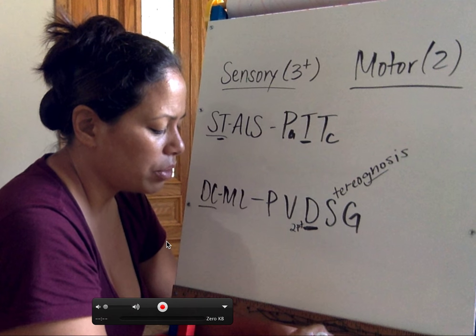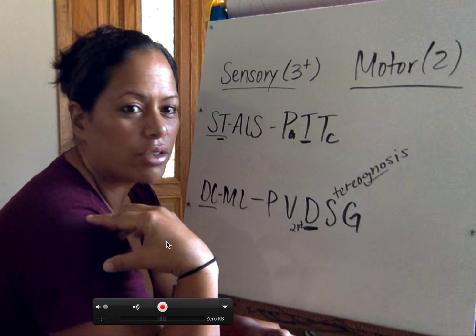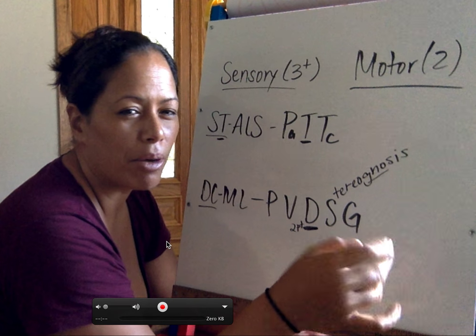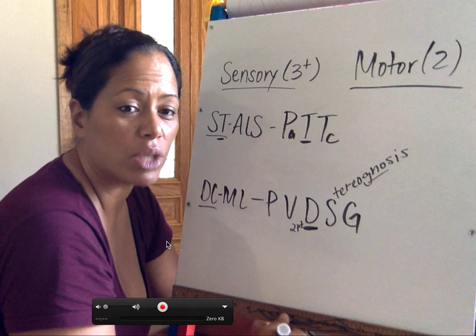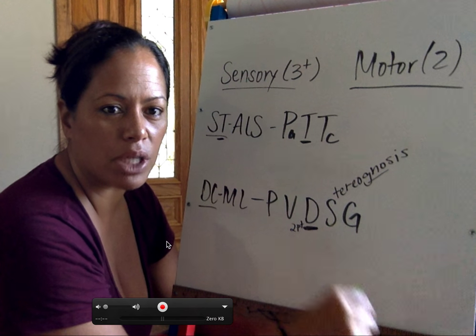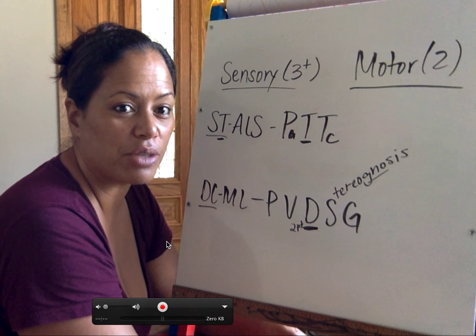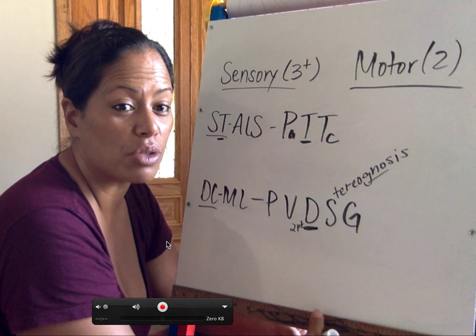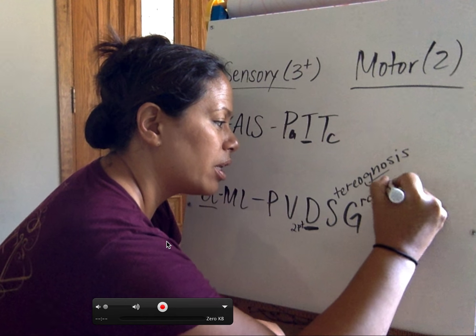G is for graphesthesia. When a friend is writing on your hand during class, your ability to understand what they're writing without looking is called graphesthesia. 'Graph' means to write; 'esthesia' means sensation. An anesthetic — 'an' means without, 'esthesia' means to feel — is used to stop the sensation of feeling, like during surgery.